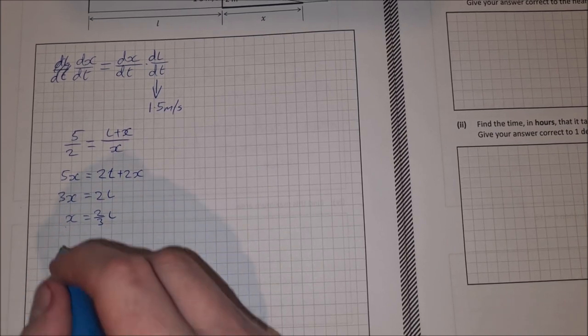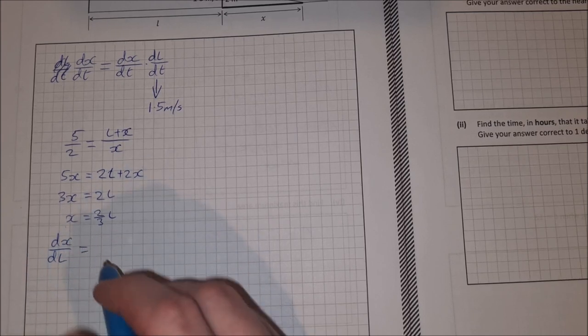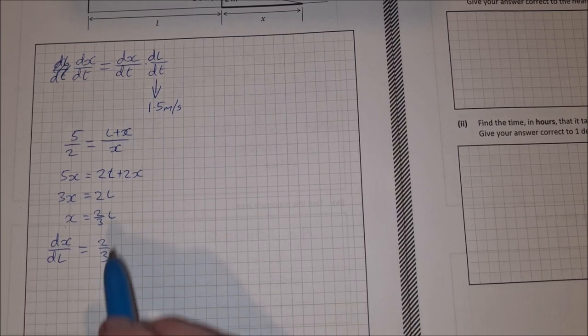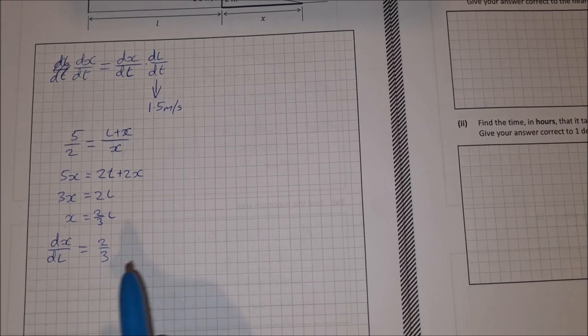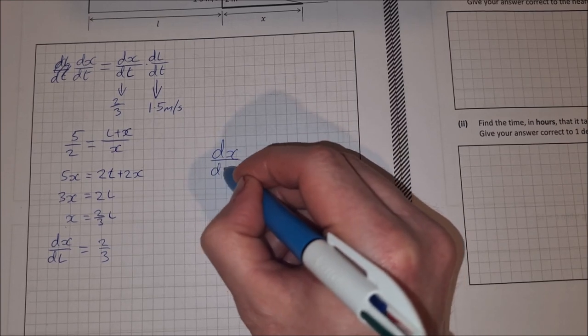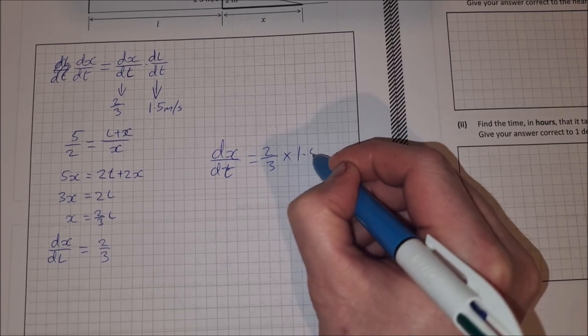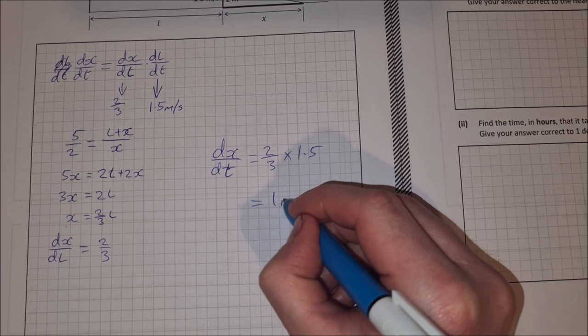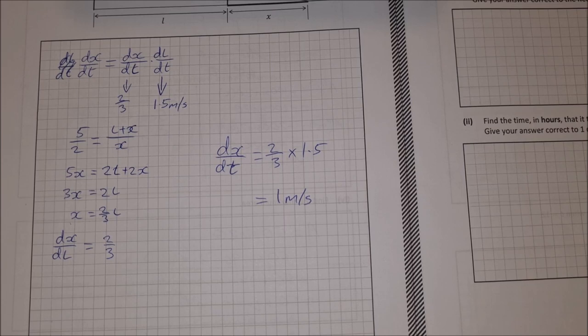So now I can differentiate x with respect to L. So dx/dL is equal to just 2 over 3. So now I can sub that in here. So that's dx/dL. So I can sub in 2 over 3 and find dx/dt is equal to 2 over 3 multiplied by 1.5. So that is equal to 2 over 3 times 3 over 2, which is 1 meter per second. So the rate of change of the shadow is 1 meter per second.